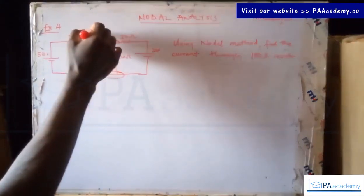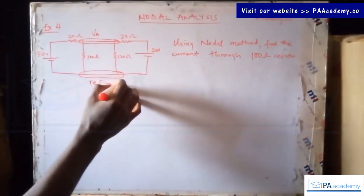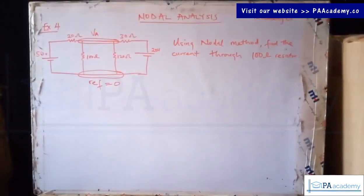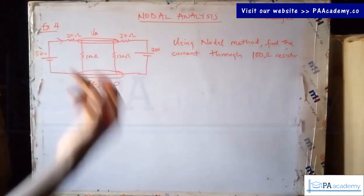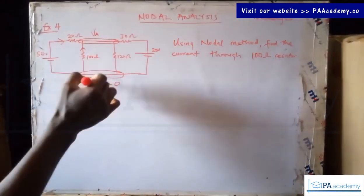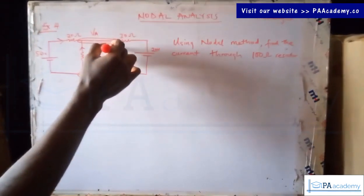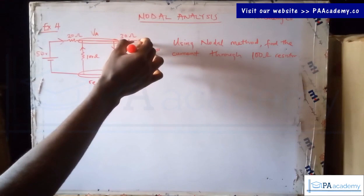So this is a node — let's call it VA — and this is also a node, which we'll take as the reference node and label as zero. Now let's pick current directions. You can just pick a random direction of current. I'll say this current is going from the reference toward VA, this one is going from VA to the reference, and this one is coming from the reference to VA.